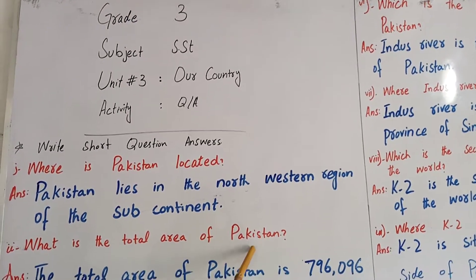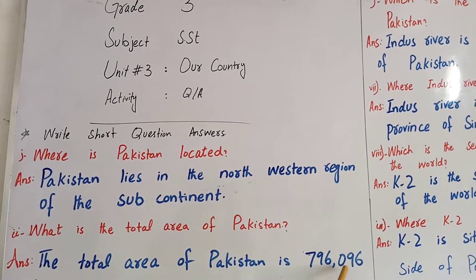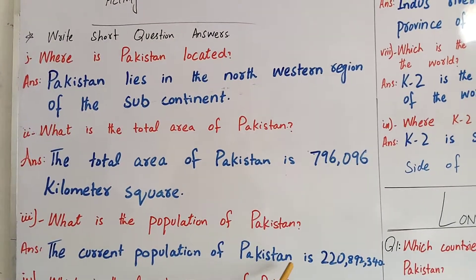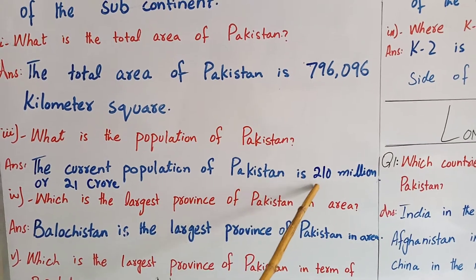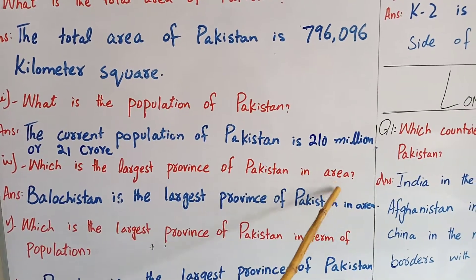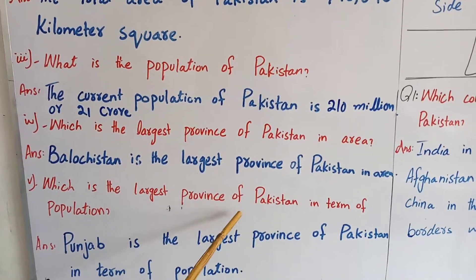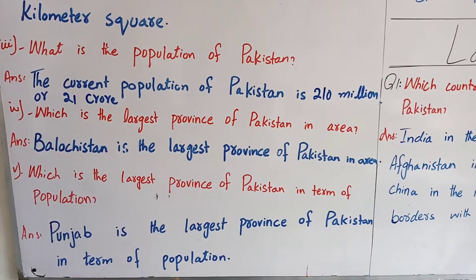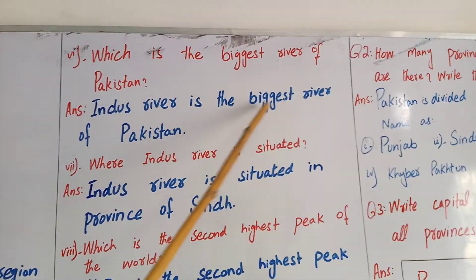What is the total area of Pakistan? The total area of Pakistan is 796,096 km². What is the population of Pakistan? The current population of Pakistan is 210 million — 21 crore. Which is the largest province of Pakistan in area? Balochistan is the largest province of Pakistan in area. Which is the largest province in terms of population? Punjab is the largest province in terms of population. Which is the biggest river of Pakistan? The Indus River is the biggest river of Pakistan.